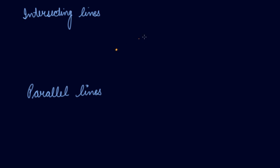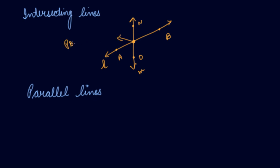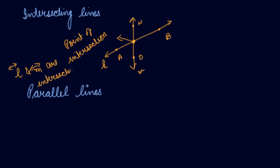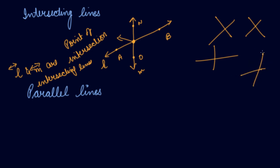Now intersecting lines. When one line L is given with line segment AB, and another line M cuts line L at point O, this point is known as the point of intersection. Lines L and M are intersecting lines. At one point they will intersect, meet, or cross each other. Any lines that cross each other like this are intersecting lines.